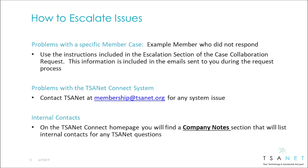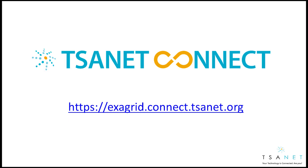Three types of issues may arise that you need to escalate. The first is a problem with a specific case — use the escalation instructions that are included in all emails. For any type of system issue, contact TSA-NET. On the TSA-NET Connect homepage, you also find a company notes section that will include internal contacts that can be used as needed.